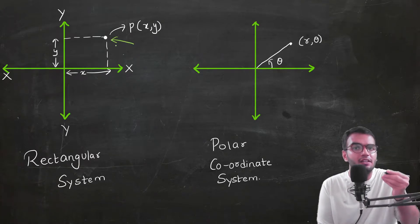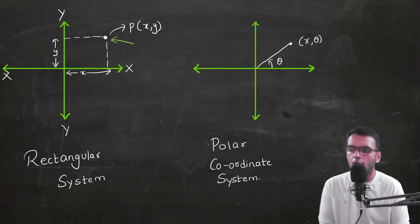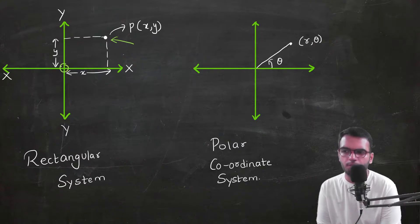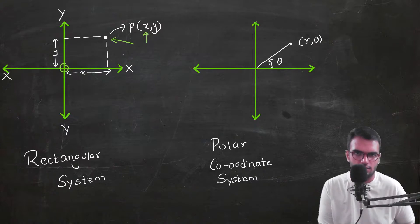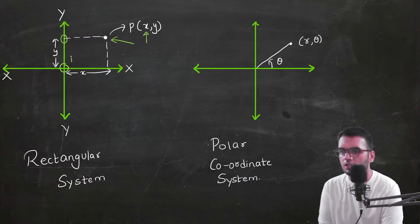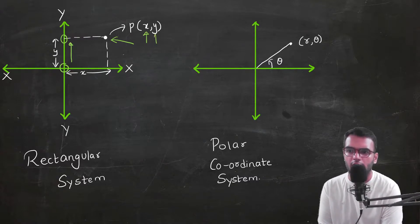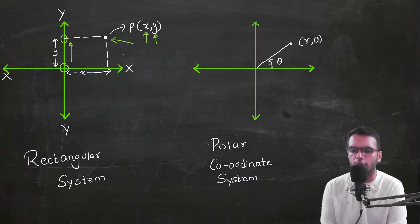In the Cartesian coordinate system, to find the coordinates of a point we start from the origin, move a distance x along the x-axis to get the x-coordinate, and similarly move towards the y-axis to get the y-coordinate. That is how we measure coordinates in the rectangular system.